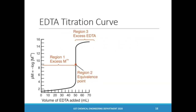Next, we move on to establishing titration curves. This is done by plotting the p-value of the metal concentration against the volume of EDTA added. This is very similar to other titration curves discussed in previous lectures. A well-designed EDTA titration experiment will result in a titration curve with a sharp endpoint. The three regions — pre-equivalence, equivalence, and post-equivalence — are also apparent in EDTA titration curves.